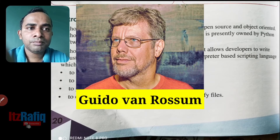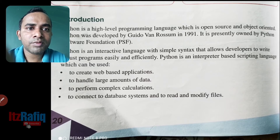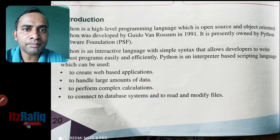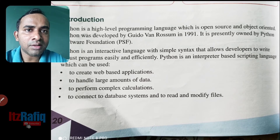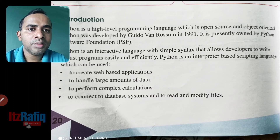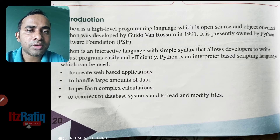Python was developed by Guido van Rossum in 1991 and is presently owned by the Python Software Foundation. Python is an interactive language with simple syntax that allows developers to write robust programs easily and efficiently. Unlike languages like C and Java, where you have to follow brackets, commas, and semicolons, these things are not required in Python.